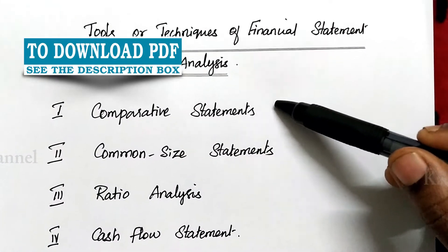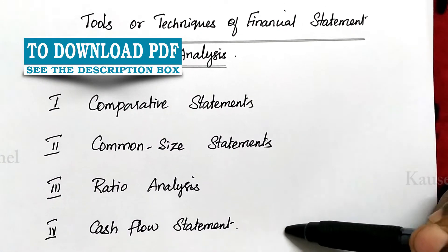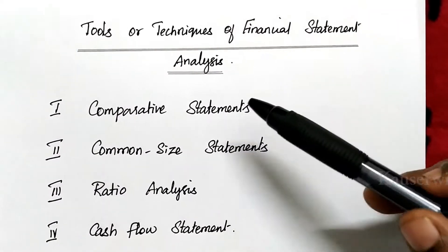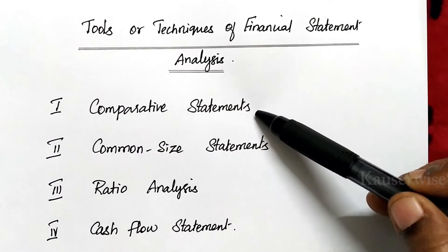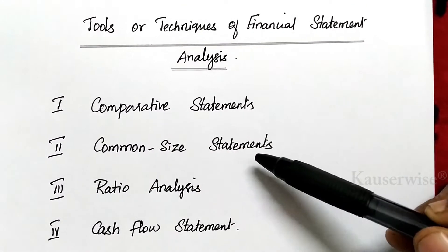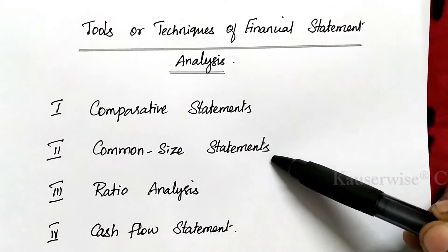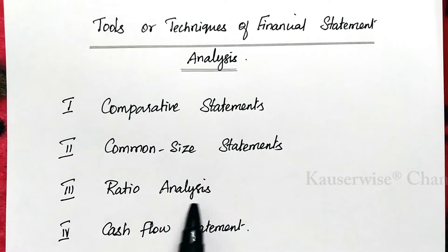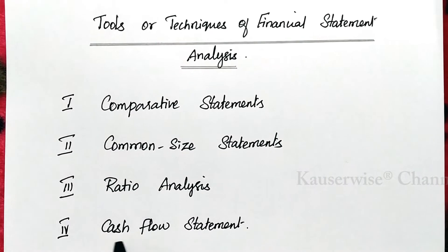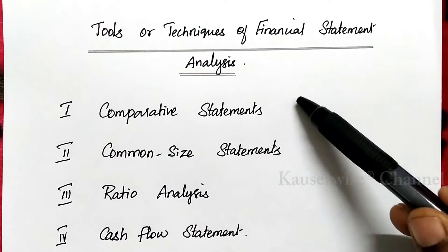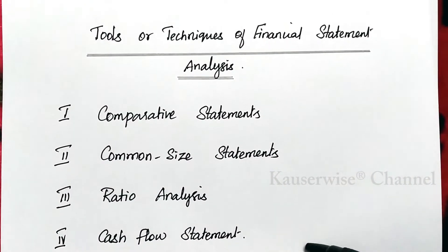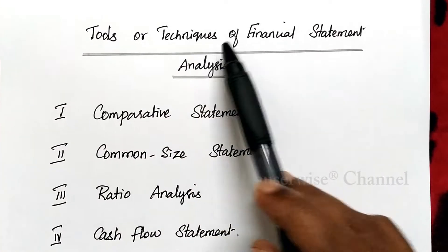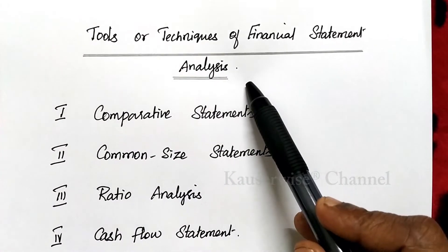Here we have four different tools or techniques of financial statement analysis. The first one is comparative statements, the second one is common size statements, the third one is ratio analysis, and the last one is cash flow statement. These are the four important tools or techniques of financial statement analysis.